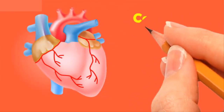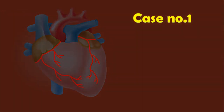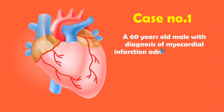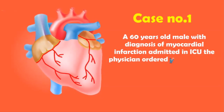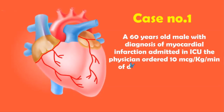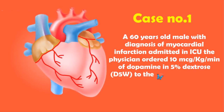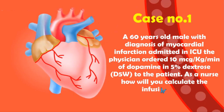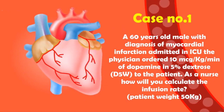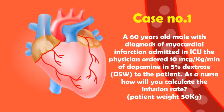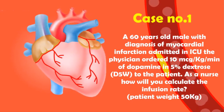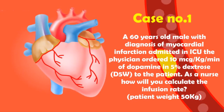Let's start with an example. Case number one: a 60-year-old male with a diagnosis of myocardial infarction admitted to the intensive care unit. The physician ordered 10 micrograms per kg body weight per minute of dopamine in 5% dextrose. As a nurse, how will you calculate the infusion rate? The patient weighs 50 kilograms.